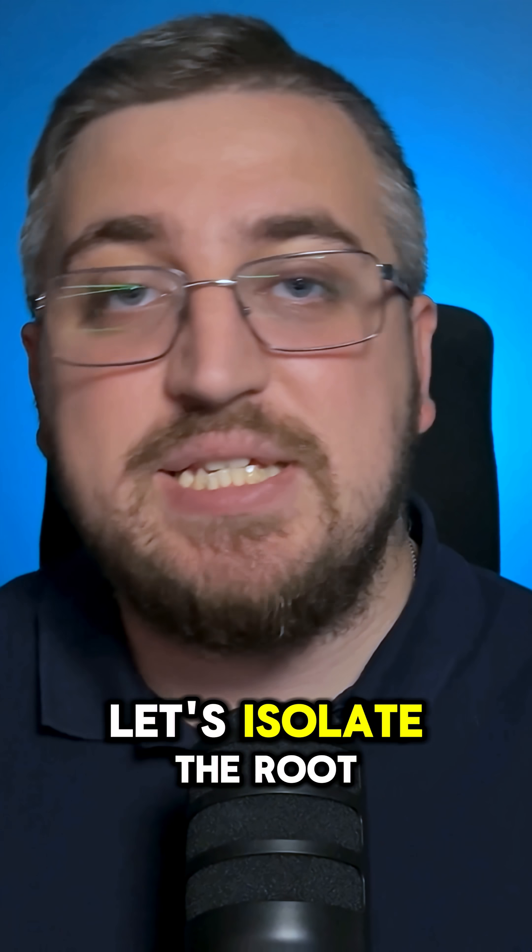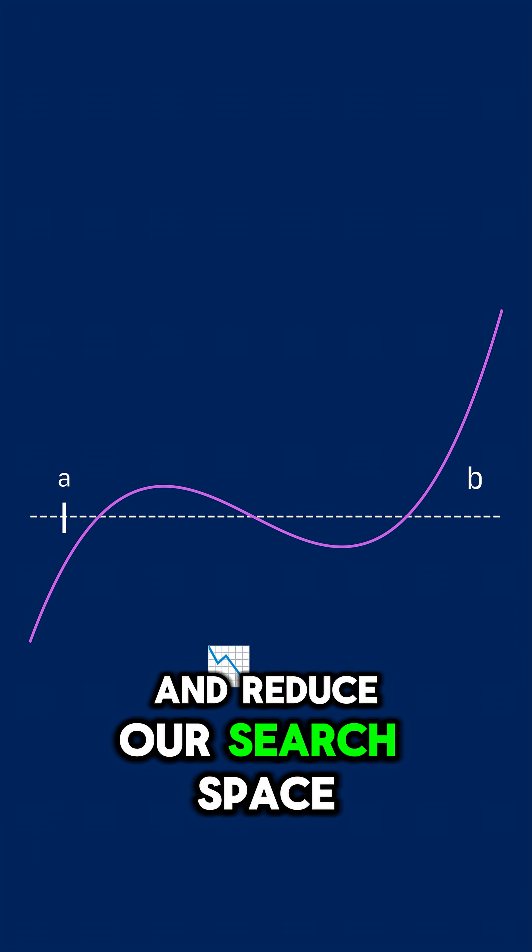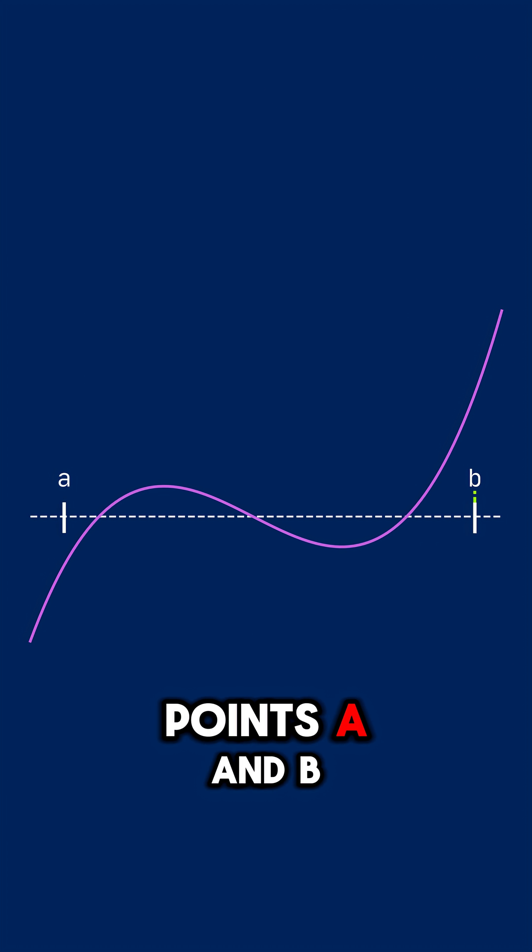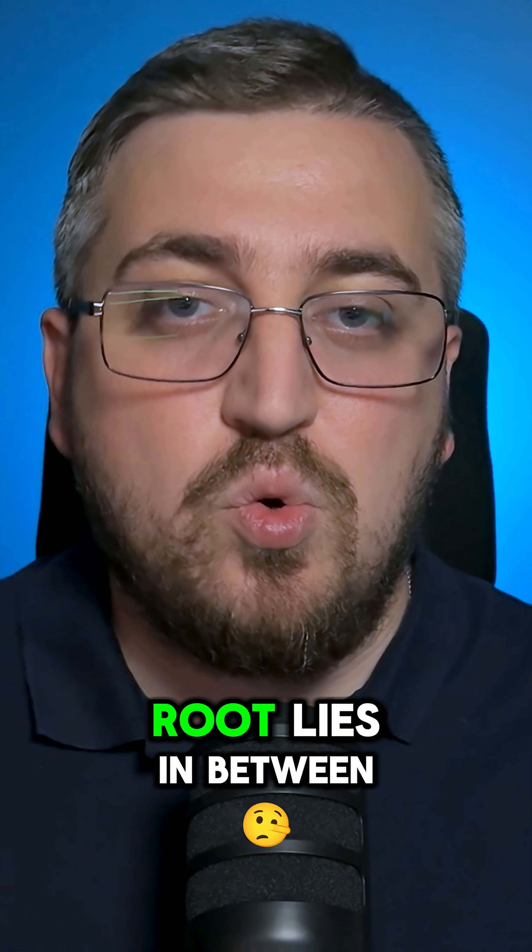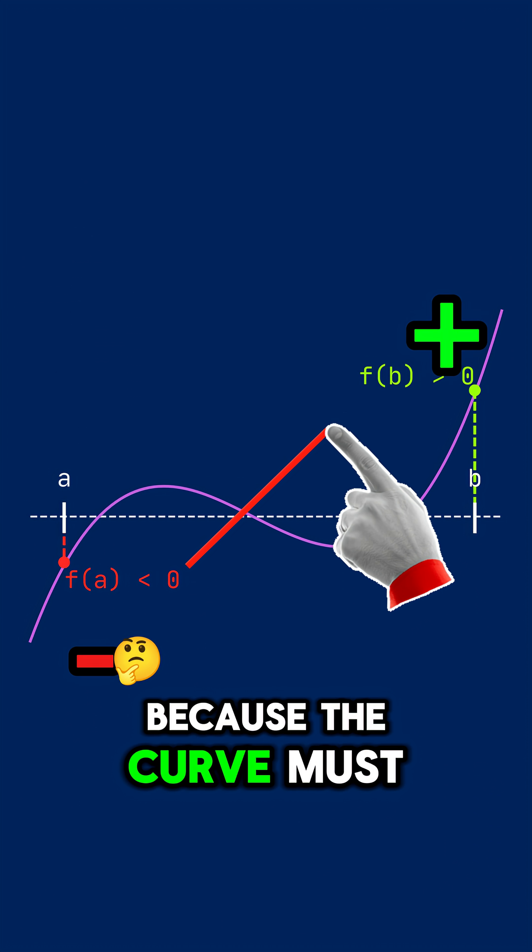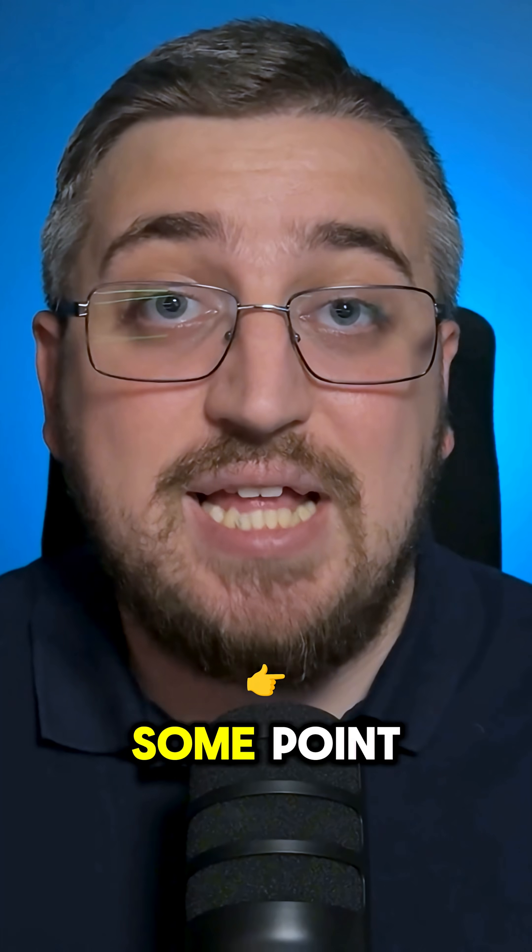Given the interval is just too big, let's isolate the root and reduce our search space. First we pick two points A and B where the function values are with opposite signs. That guarantees that the root lies in between because the curve must cross the x-axis at some point.